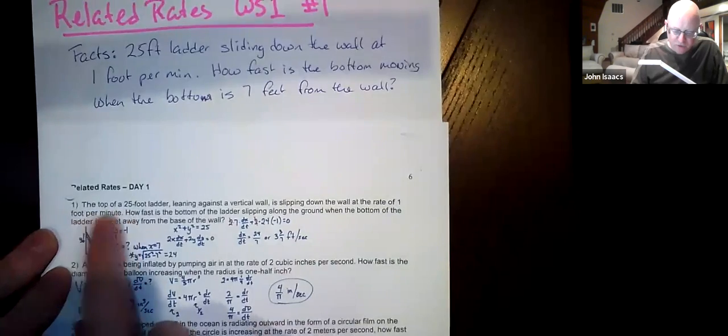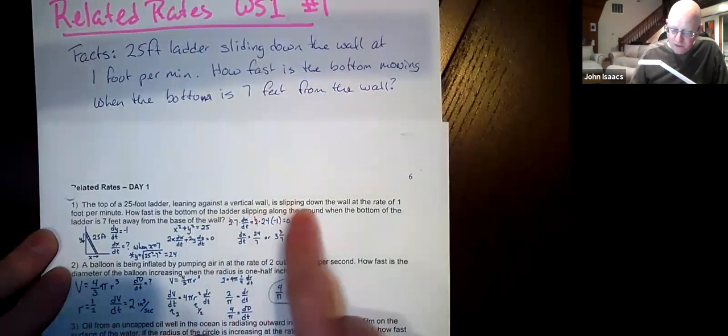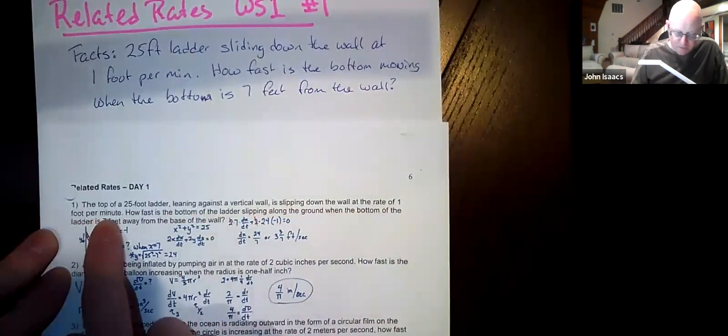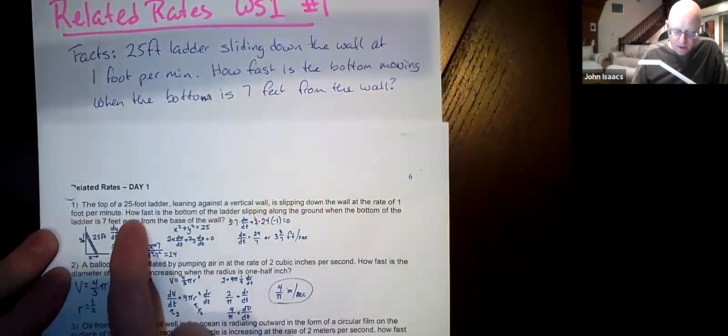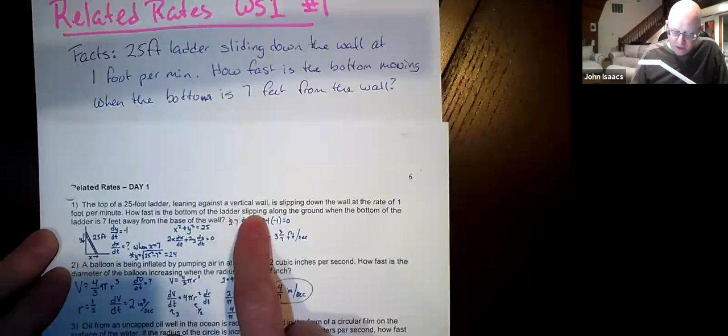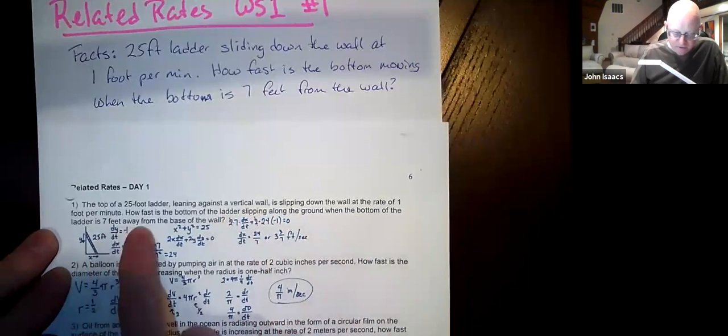The top of a 25-foot ladder leaning against the vertical wall, most walls are vertical, is slipping down the wall at a rate of one foot per minute. So the top of the ladder is moving at one foot per minute. How fast is the bottom of the ladder slipping along the ground when the bottom of the ladder is seven feet away from the base of the wall?